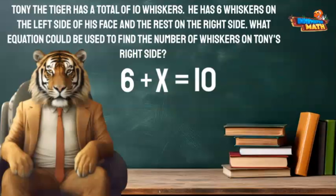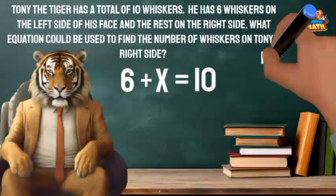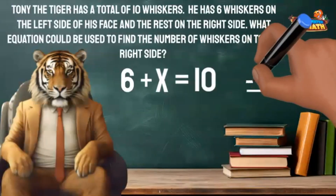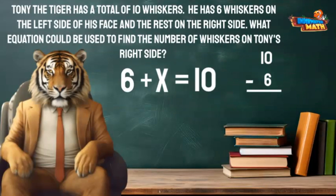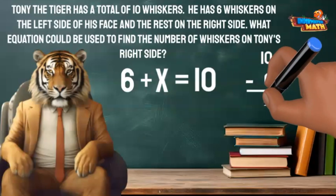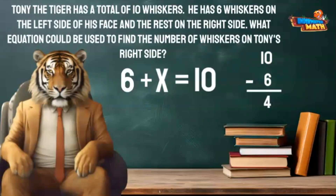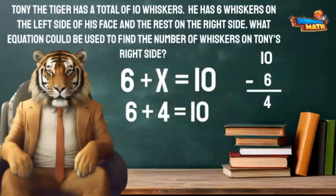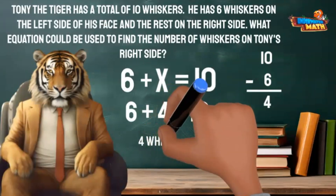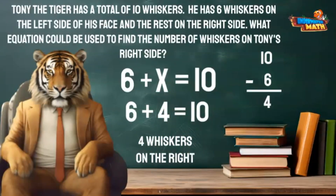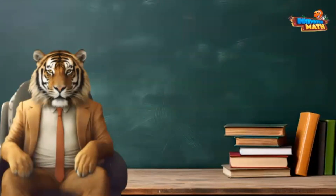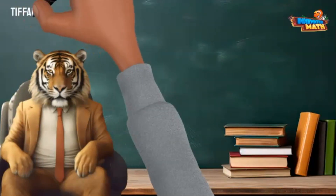Six plus a number will equal 10. I can use subtraction to help me find the unknown value. If I subtract 10 minus 6, I can determine the unknown number. 10 minus 6 equals 4, so 6 plus 4 equals 10. Tony has four whiskers on his right side. That was great fun — let's try one more!